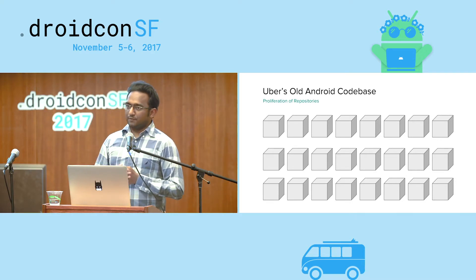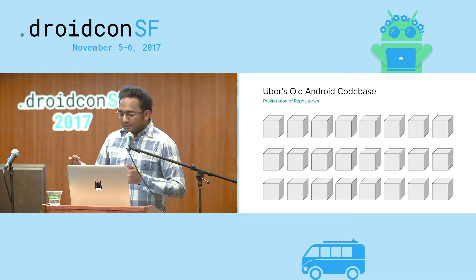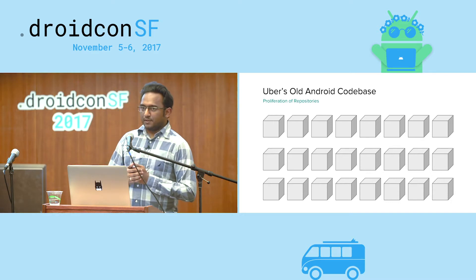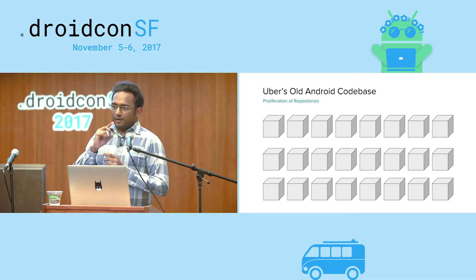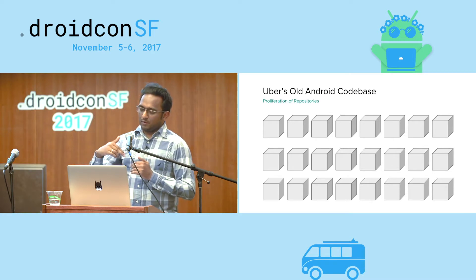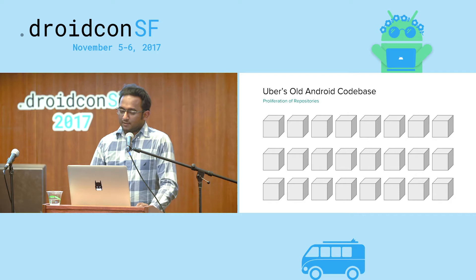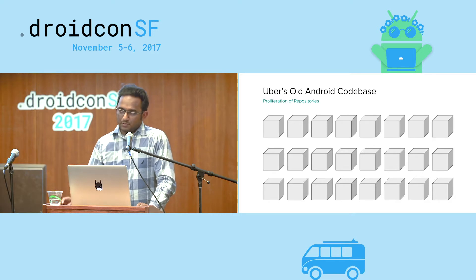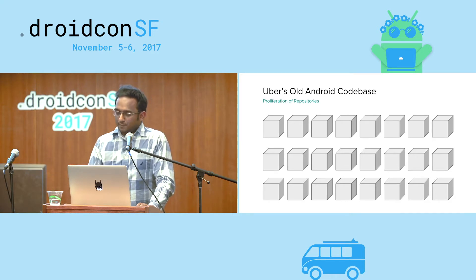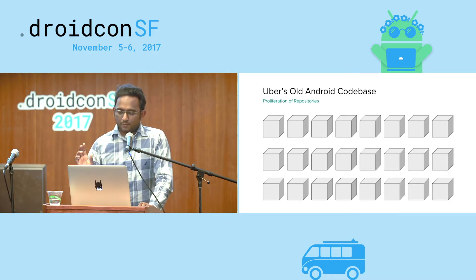Sometimes you would want to build a feature as a separate repository. One example is the help feature. If you go to the Rider app, you can see your previous trips and look at your stats. This kind of feature is also useful on the driver side if they want to look at their previous trips. So we decided to build a few features in different repositories.